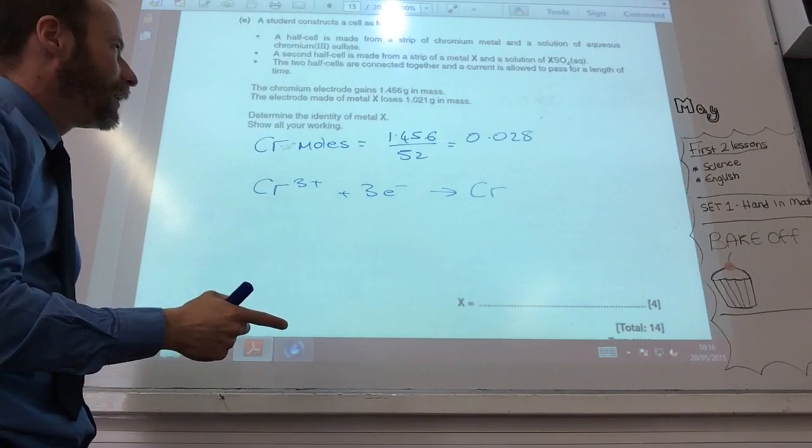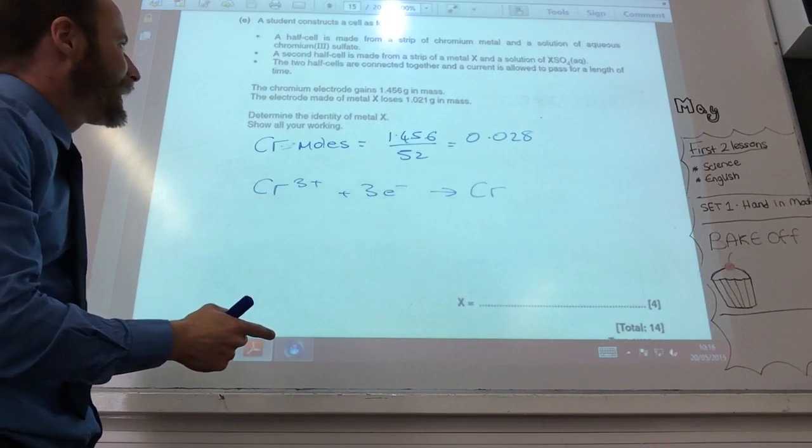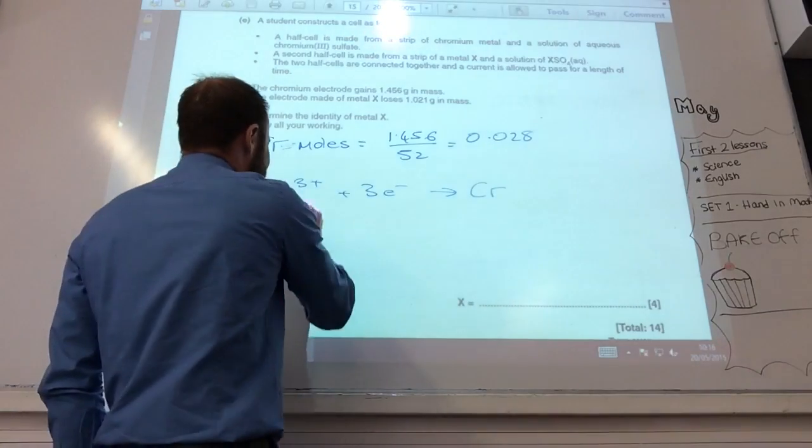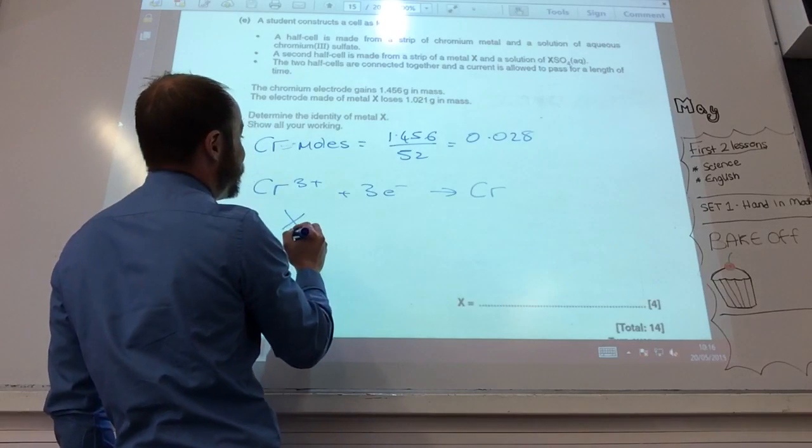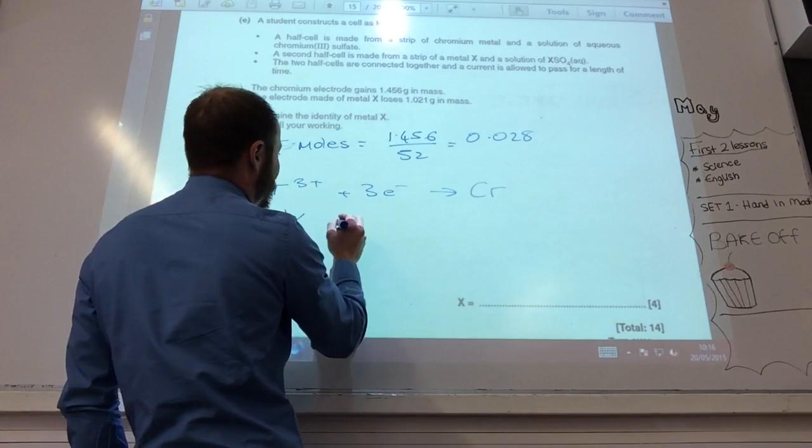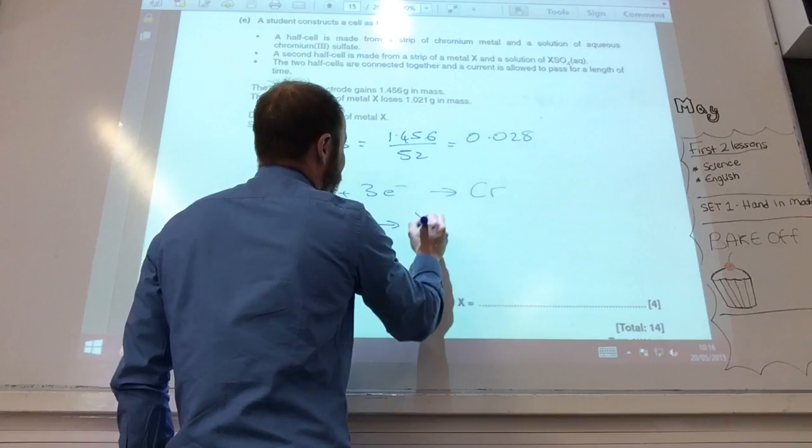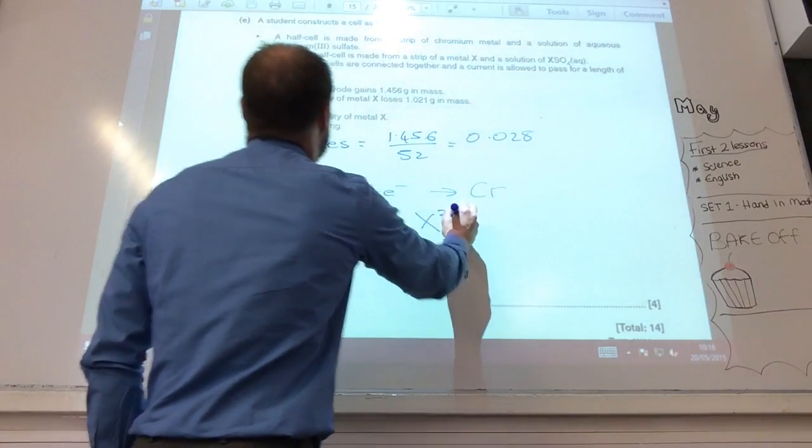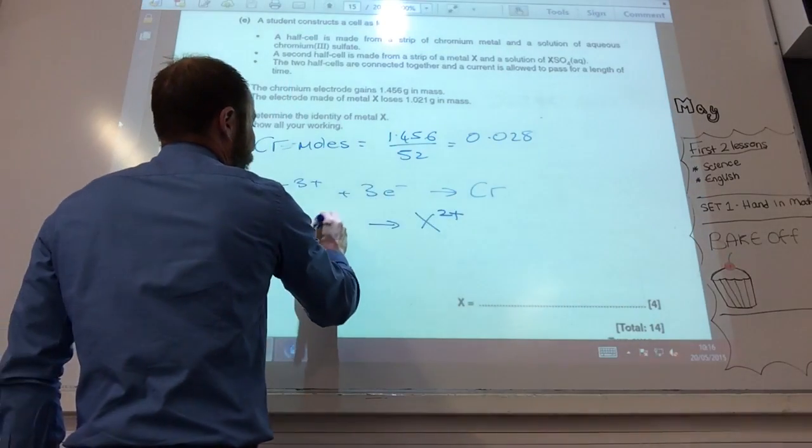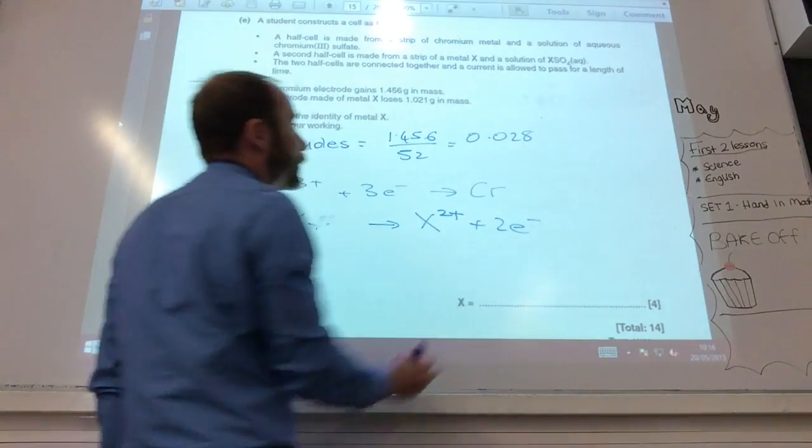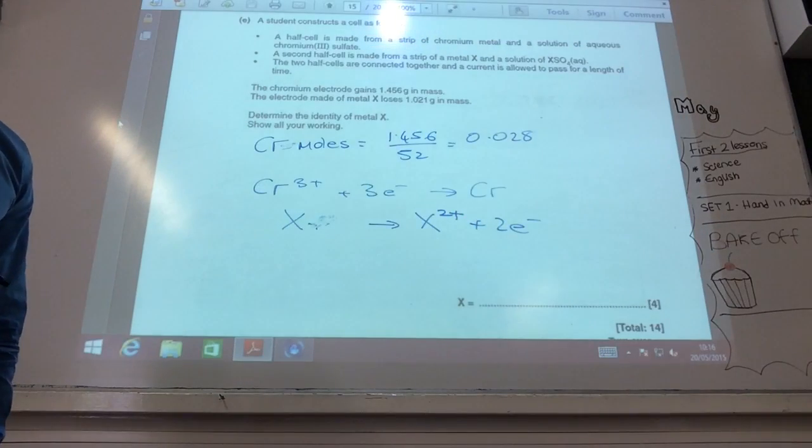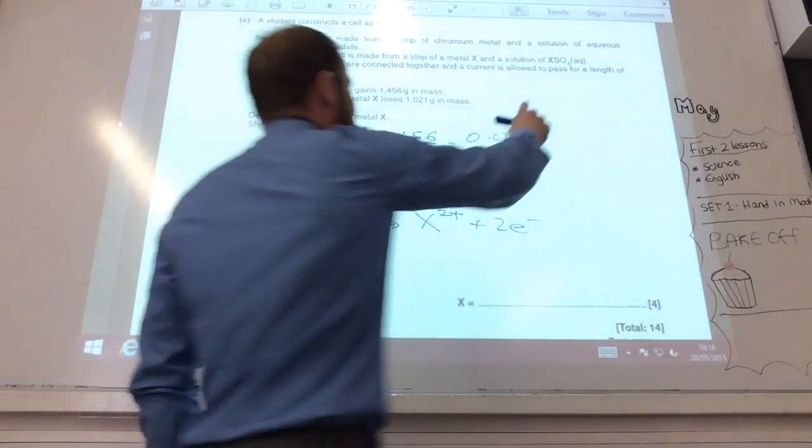I know it's gone that way because chromium has gained mass. Metal X must have gone to X2+ and got 2 electrons there. Why do I know it's X2+? Because of the SO4 2-.